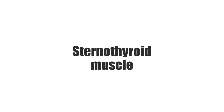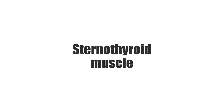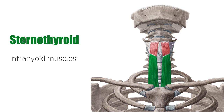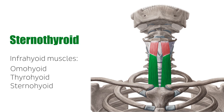Hello again everyone, it's Matt from Kenhub, and today we will be discussing the sternothyroid. The infrahyoid muscles are a group of four muscles under the hyoid bone attaching to the sternum, larynx, and scapula. They are the omohyoid, the thyrohyoid, the sternohyoid, and the sternothyroid.